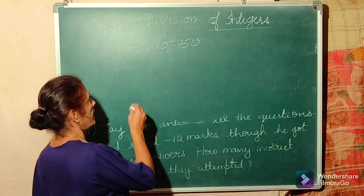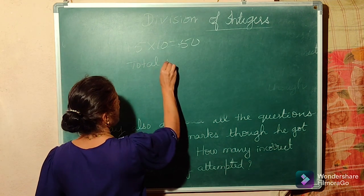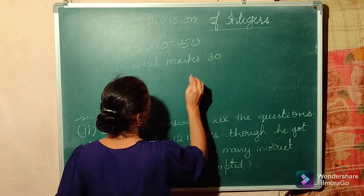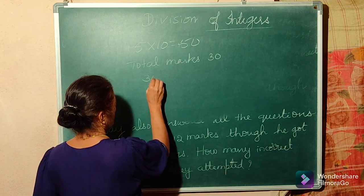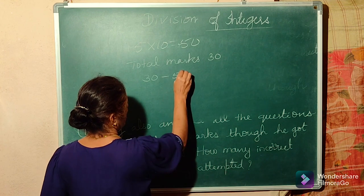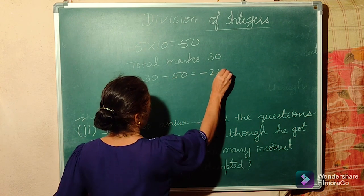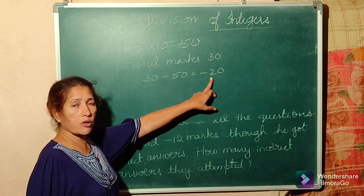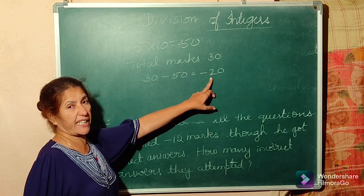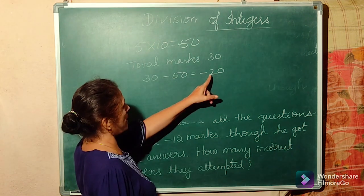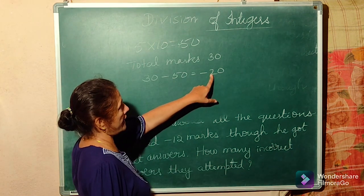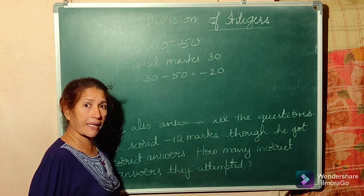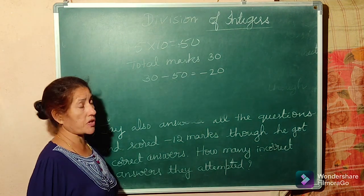Her total marks were 30. So the marks deducted for incorrect answers: 50 minus 20 equals 30. That means minus 20 marks was deducted for the incorrect answers. So minus 20 is the total deduction.